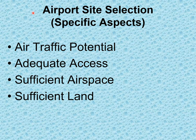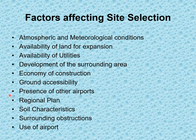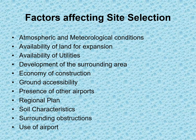Site selection considers: air traffic potential, adequate access, sufficient airspace, and sufficient land. Factors affecting site selection include: atmospheric and meteorological conditions, availability of land for expansion, availability of utilities, development of the surrounding area, economy of construction, ground accessibility, presence of other airports, regional plan, soil characteristics, surrounding obstructions, and use of airports.